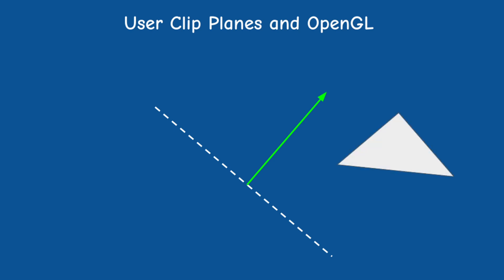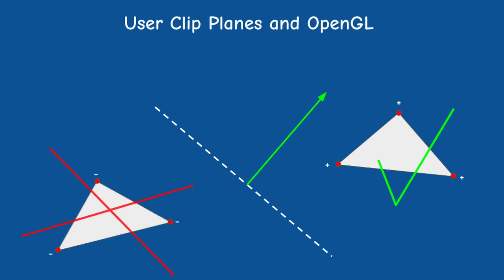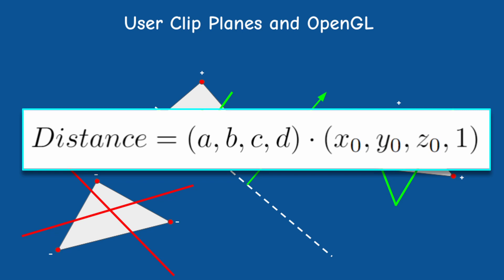Before using gl_ClipDistance we have to enable each slot individually using glEnable on GL_CLIP_DISTANCE and the index of the corresponding slot. What goes into the slots of gl_ClipDistance is the signed distance of the vertex to the clip plane. When a triangle is rendered, the sign of the clip distance of the three vertices is checked. If all are positive, the triangle continues to rasterization as usual. If all are negative, the triangle is dropped. If there's a mix, the triangle is clipped at the exact point where the interpolated clip distance becomes zero — done automatically by the OpenGL pipeline.